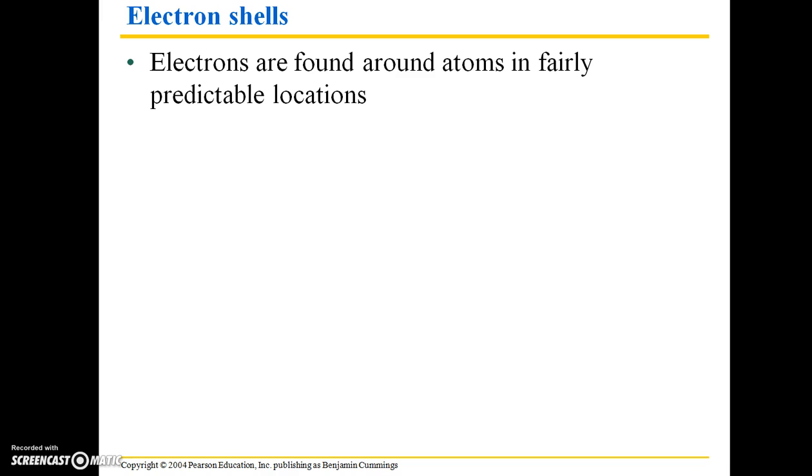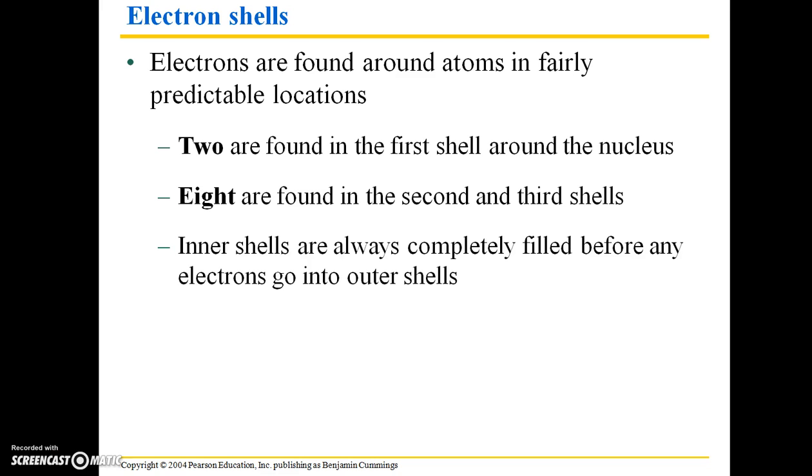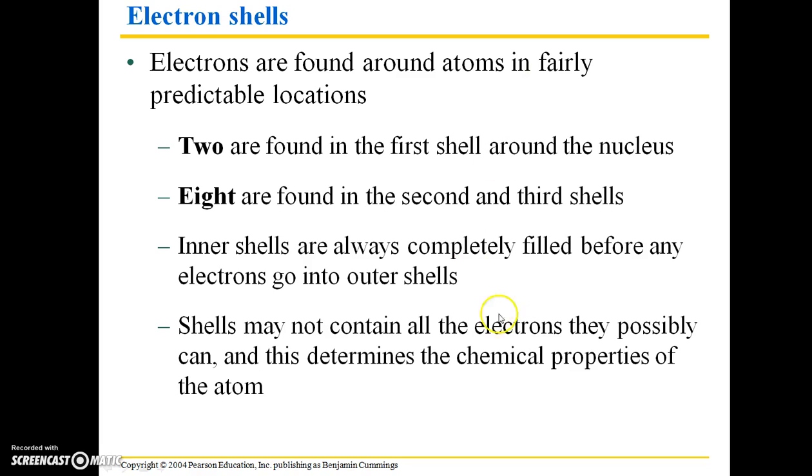Electrons are found around atoms in fairly predictable locations. Two are found in the first shell around the nucleus. Eight are found in the second and third shells. The inner shells are always completely filled before any electrons go into the outer shells. So you're not going to find an atom with one electron in the first shell and three electrons in the second shell. There's going to be two electrons in the first shell if there are two or more electrons around that nucleus. Shells may not contain all the electrons they possibly can, and this determines the chemical properties of the atom involved.